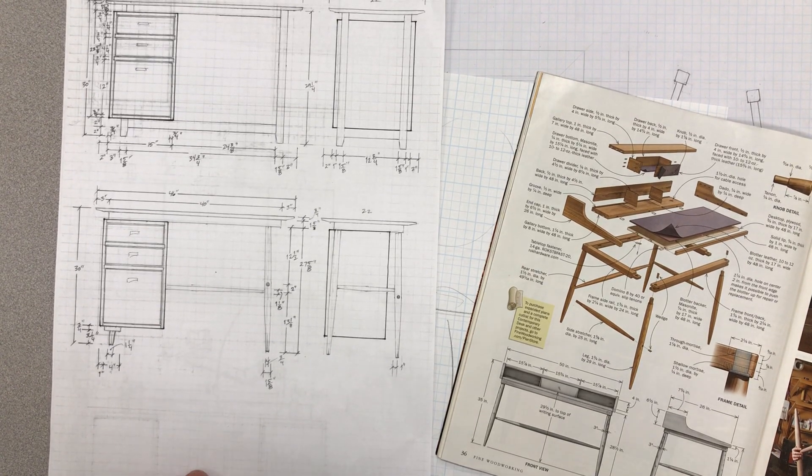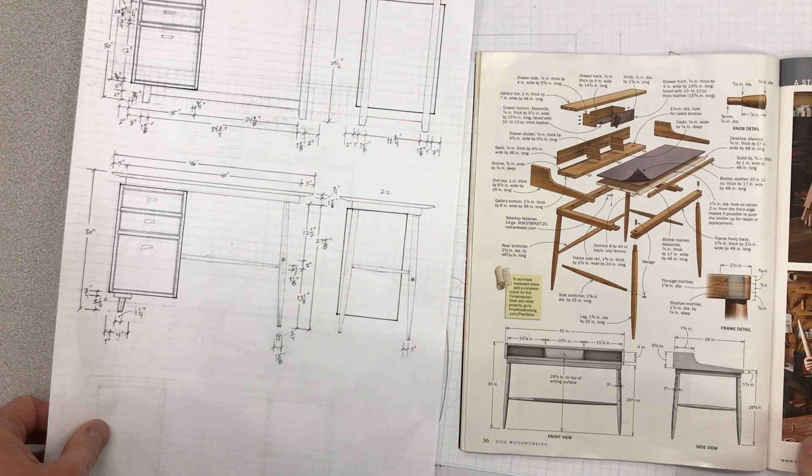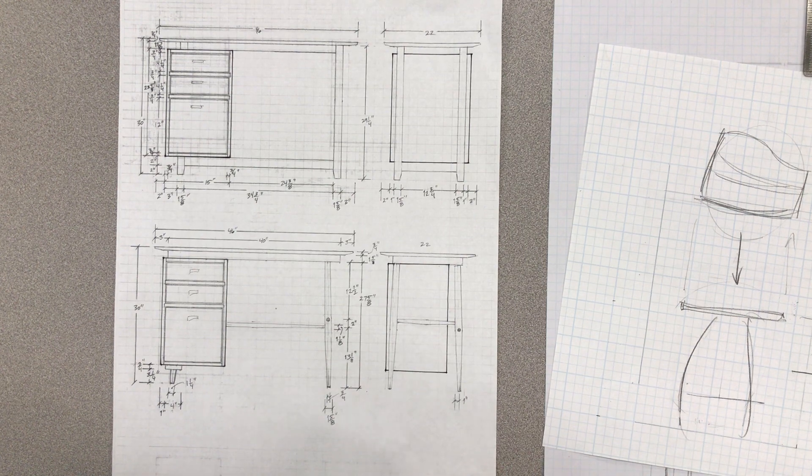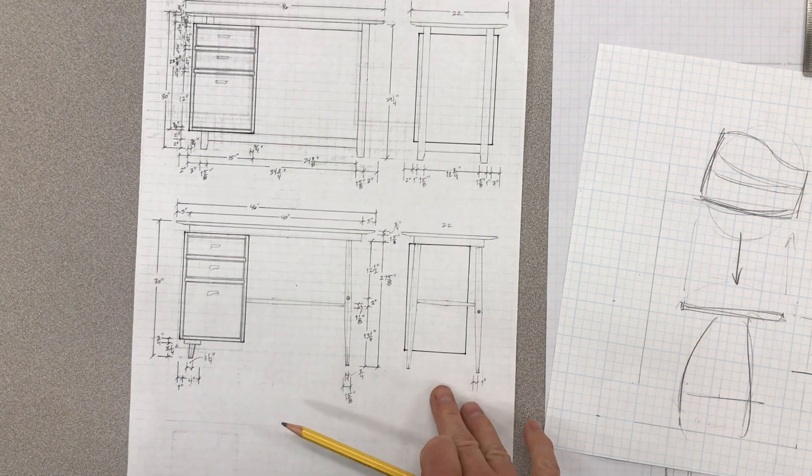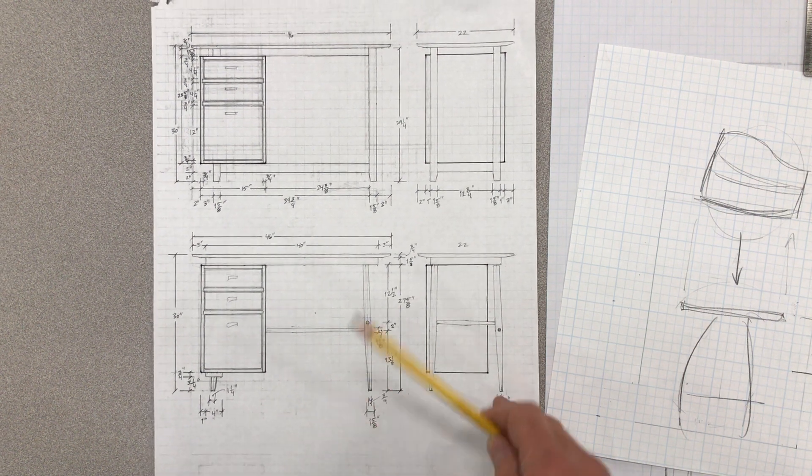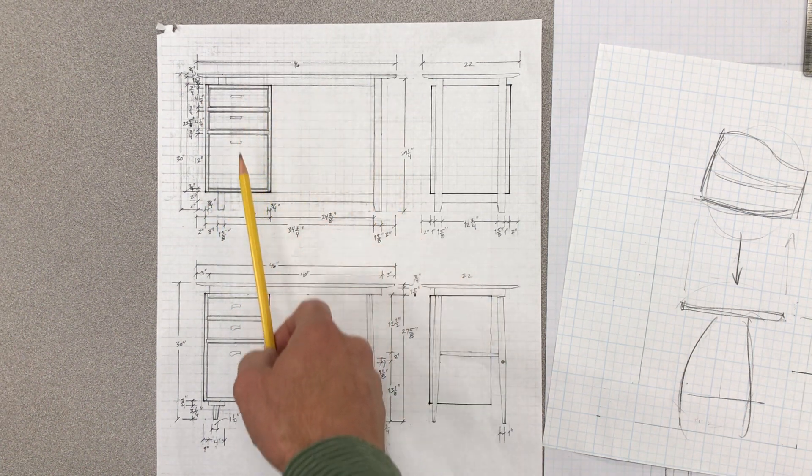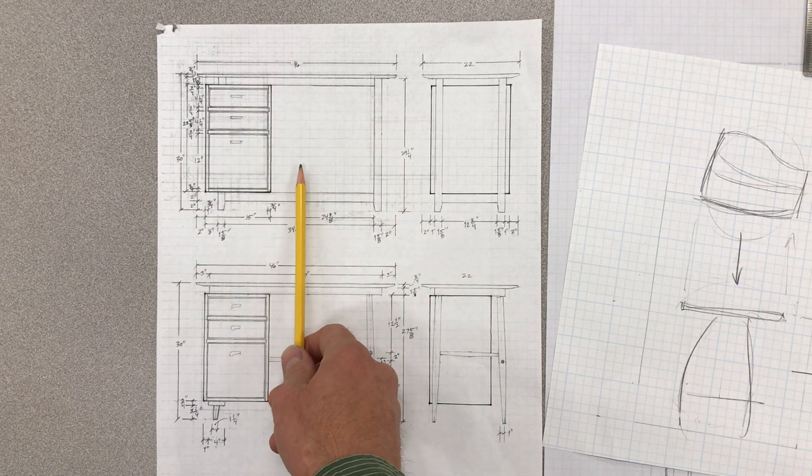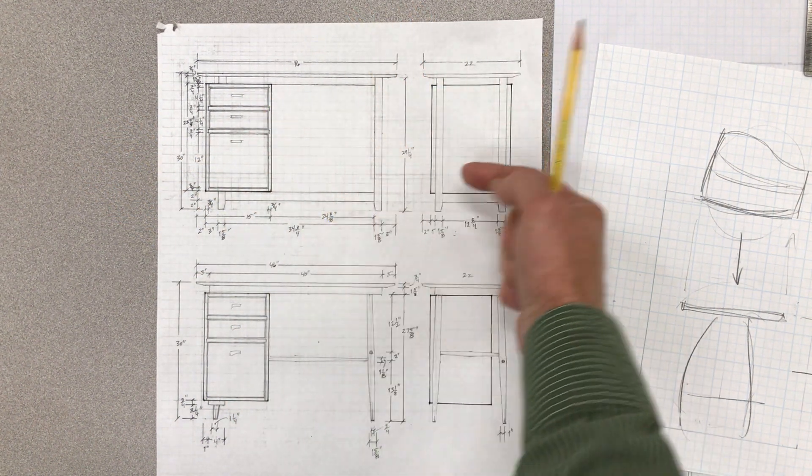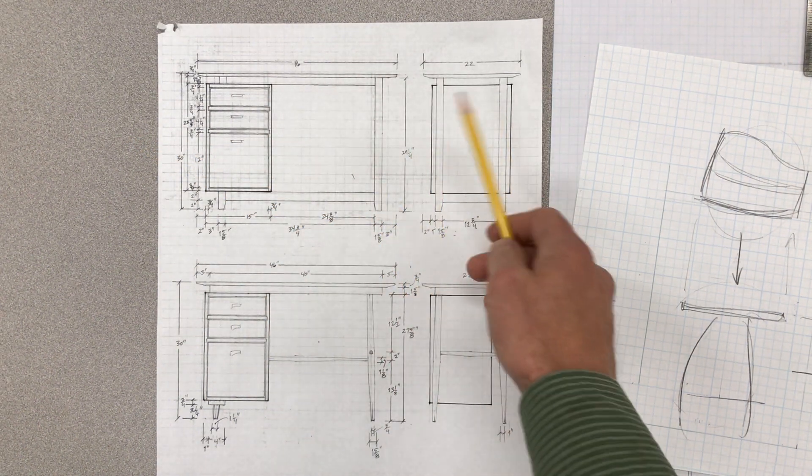We're going to work on the drawing for our end table. First, some basics. This is a drawing from last year when we did our desks, but same idea—this is a scale drawing. Notice the front view, or the so-called elevation drawing, and then to its right is the side view, as if we're looking at that side. That's what it looks like.